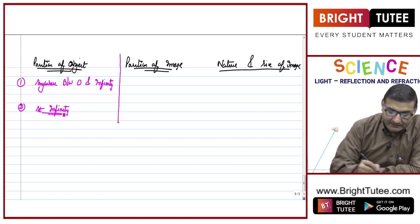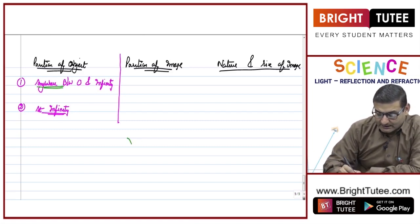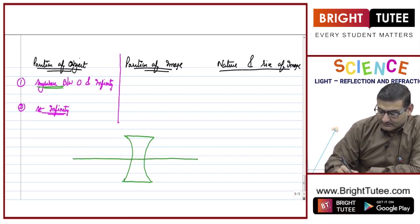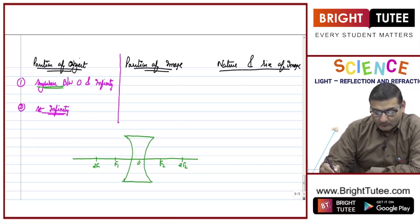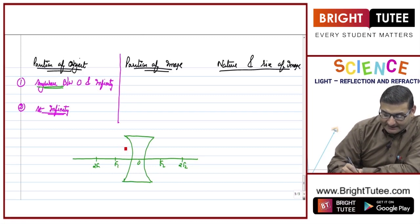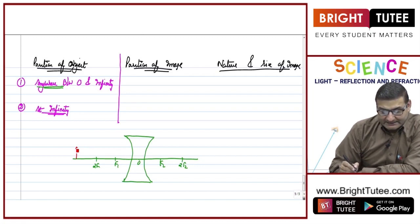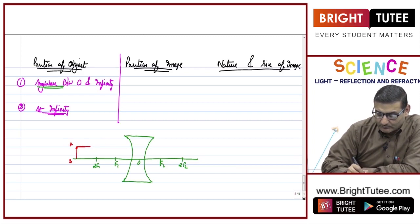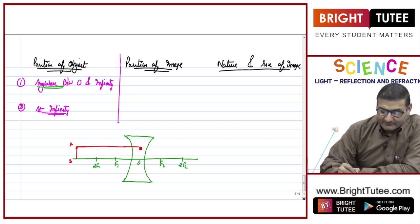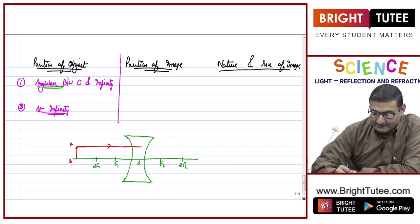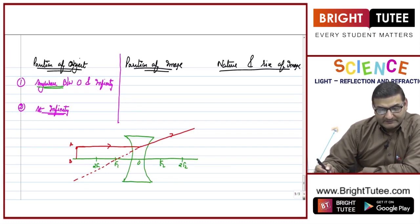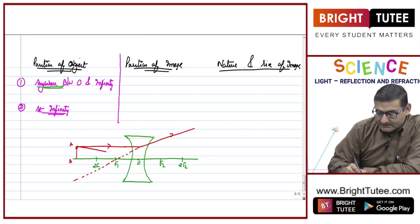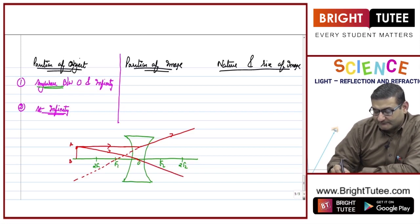For the first case, we draw the concave lens with the principal axis, optical center, f2, twice f2, f1, and twice f1. The object AB is placed anywhere between the optical center and infinity. The first ray of light goes parallel to the principal axis and diverges, appearing to pass from the focus. The second ray of light passes through the optical center and goes straight, undeviated.